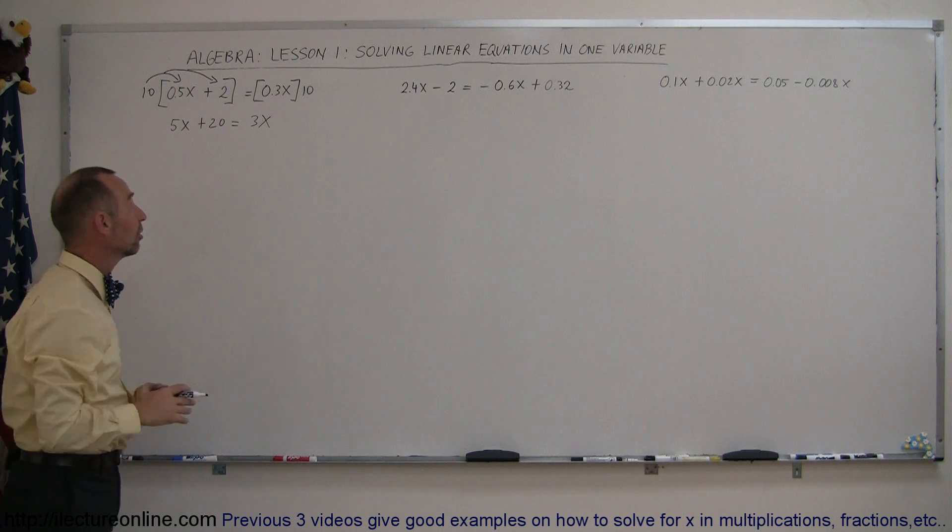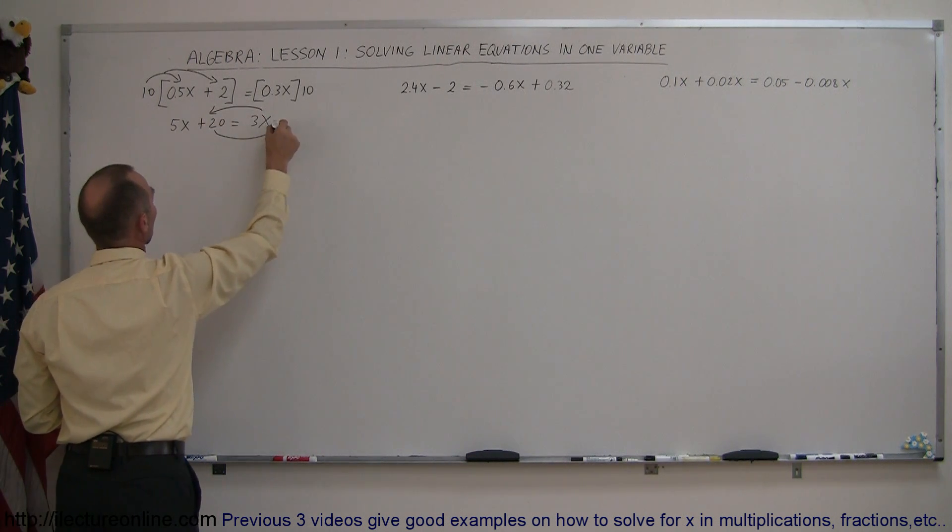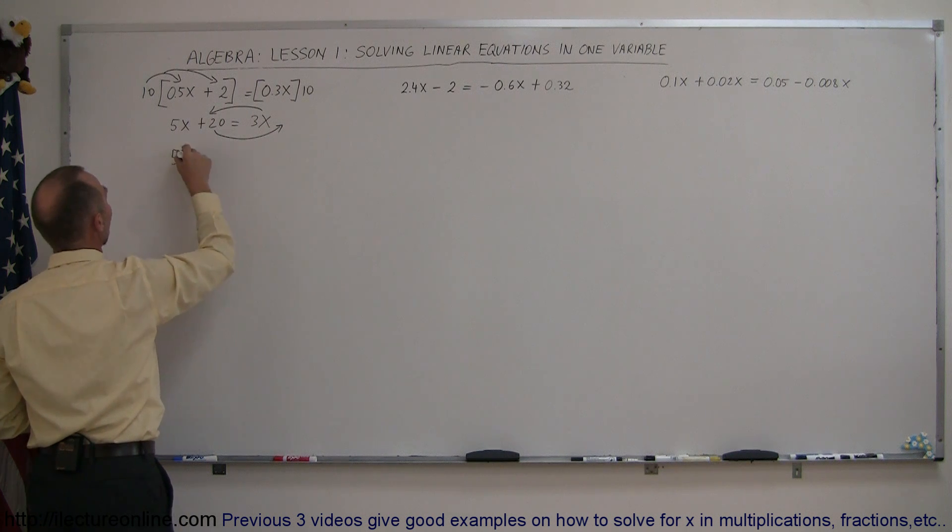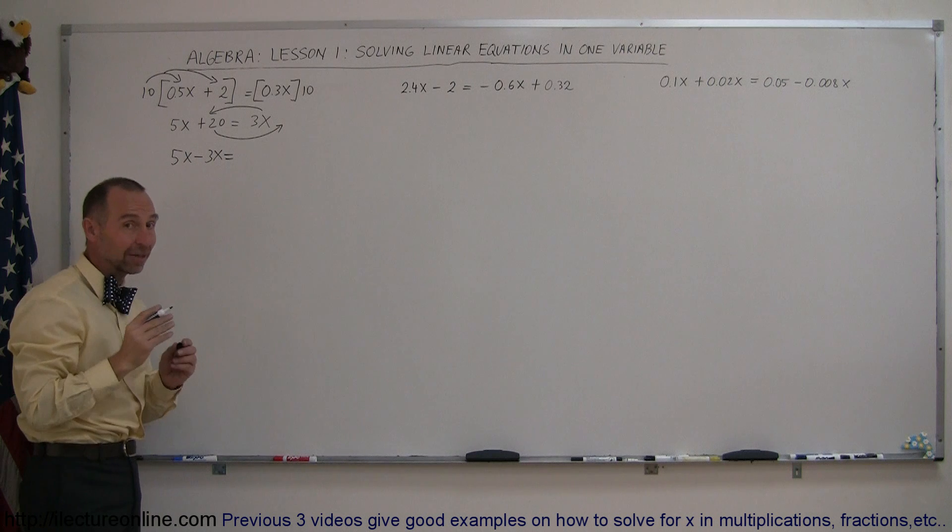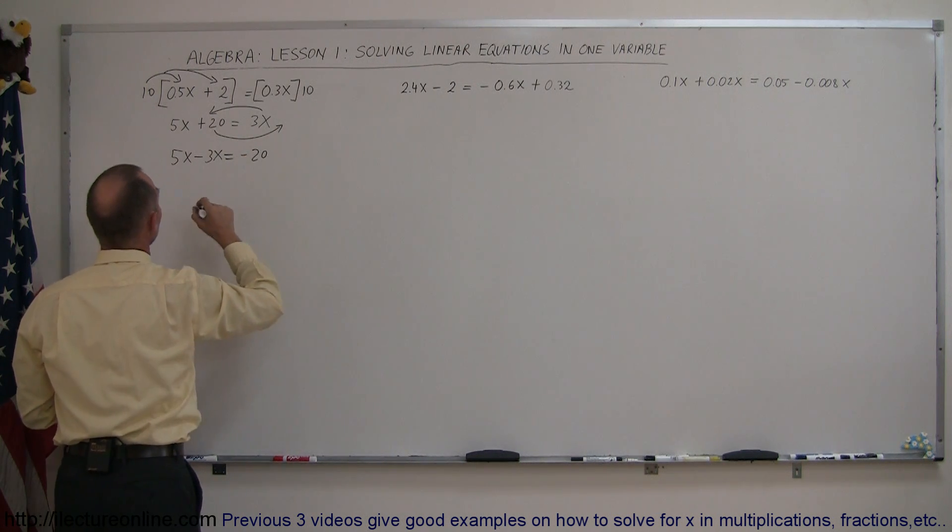Now you follow the normal procedures. Move all the terms that have an x to the left side, all the terms with the numbers to the right side, which means we end up at 5x minus 3x. Remember, when you cross the equal sign, the sign changes, so the plus 20 becomes minus 20 on the right side.